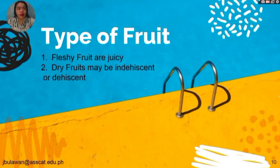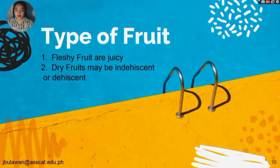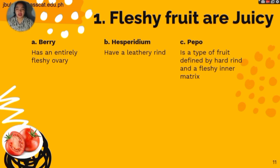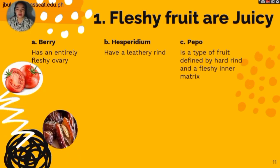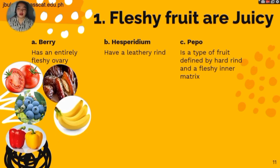Now let's go to the types of fruits. The first type of fruits are fleshy fruits, which are juicy. The second type is dry fruits, which may be indehiscent or dehiscent. Under fleshy fruits, first we have the berry, which has an entirely fleshy ovary. Examples are tomato, dates, blueberries, banana, and capsicum or pepper.